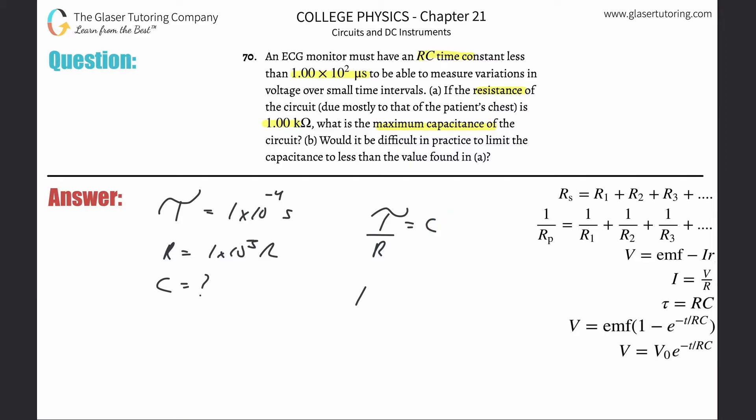So the time constant here is 1 times 10 to the minus 4th, divided then by the resistance of 1 times 10 to the 3rd is equal to the capacitance. So let's see what we get.